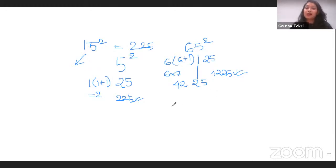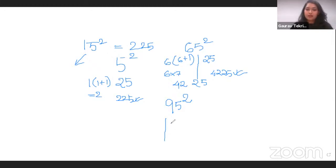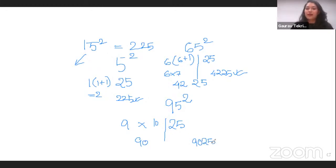Let's take an even bigger number — let's take 95 squared. Again in the same way, we do 5 squared which is 25, and here we do 9 into 10 which is 90. So the whole number turns out to be 9025. So 95 squared is 9025.